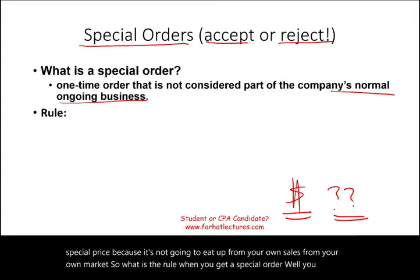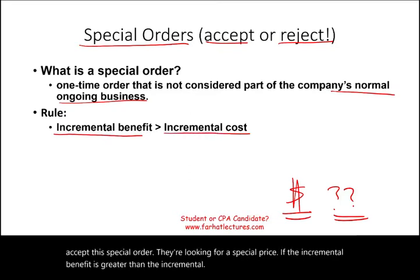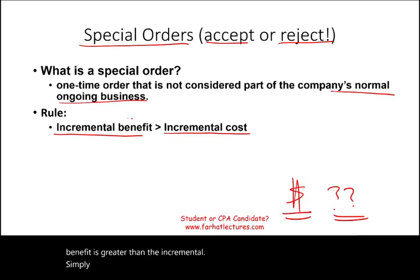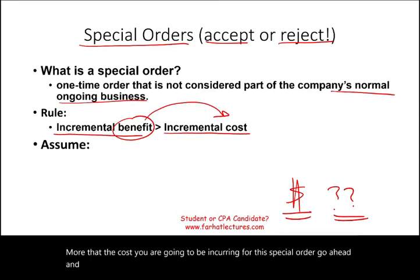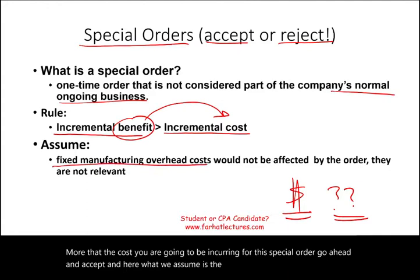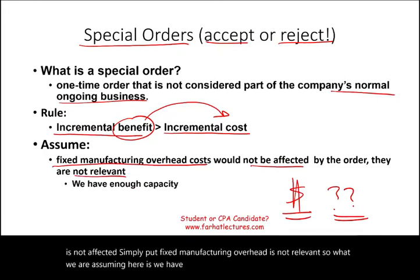You would accept a special order if the incremental benefit is greater than the incremental cost. As long as you benefit more than the cost you are going to incur for this special order, go ahead and accept. We assume the fixed manufacturing overhead cost is not affected — fixed manufacturing overhead is not relevant. We assume we have enough capacity so that fixed overhead cost is irrelevant.